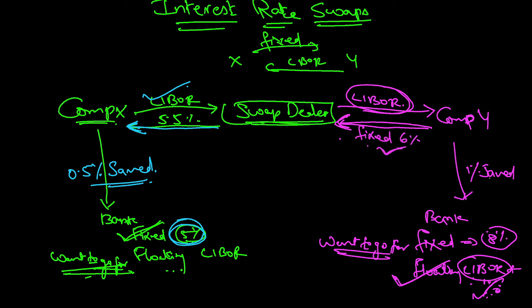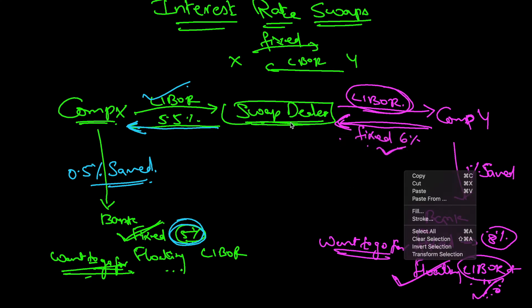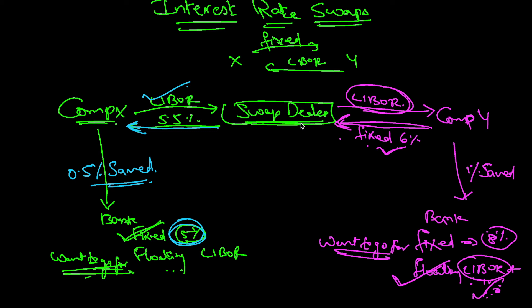Now how does the swap dealer benefit? On the LIBOR side, the dealer receives LIBOR from Company X and pays LIBOR to Company Y — those cancel out, no worry there. On the fixed side, the dealer receives 6% from Company Y and pays 5.5% to Company X. That 0.5% difference is the swap dealer's return.